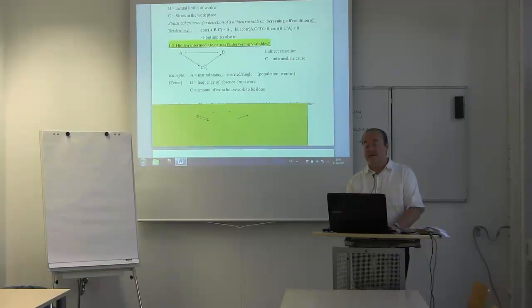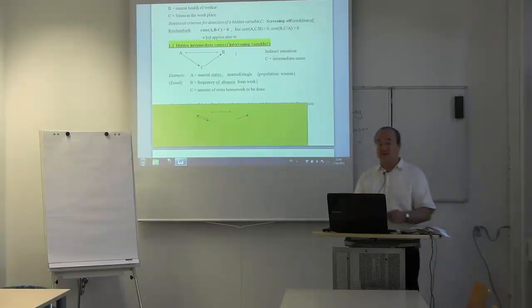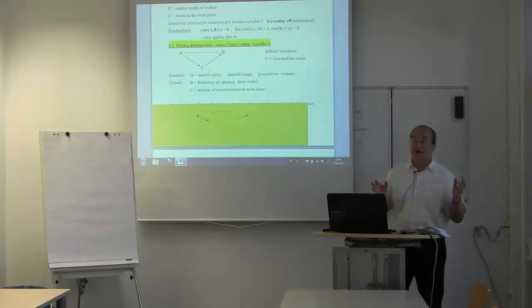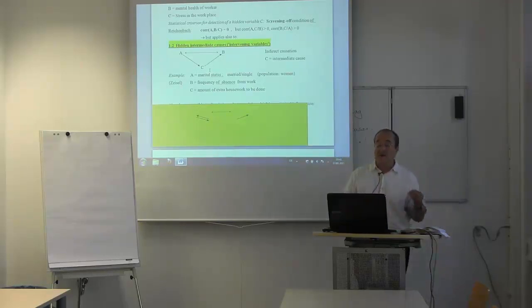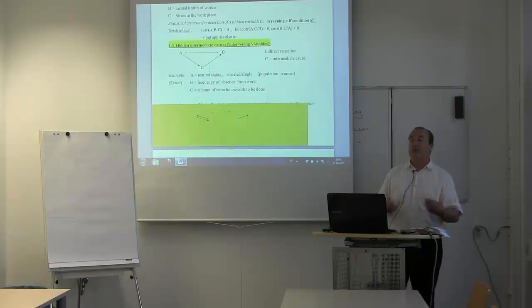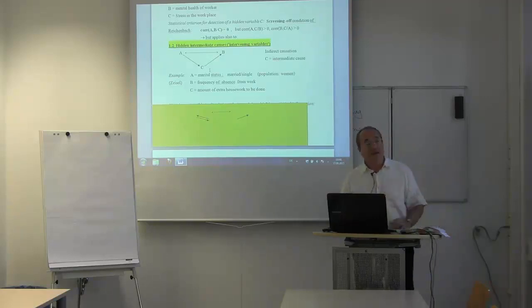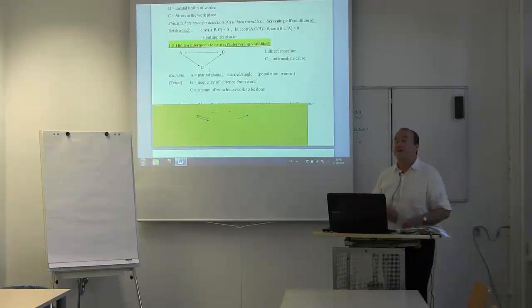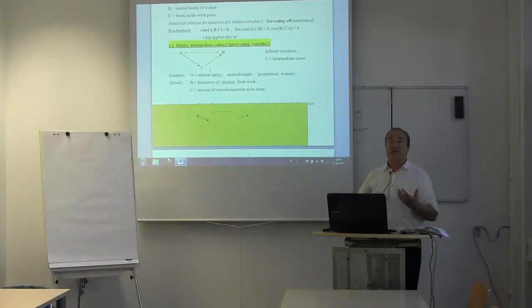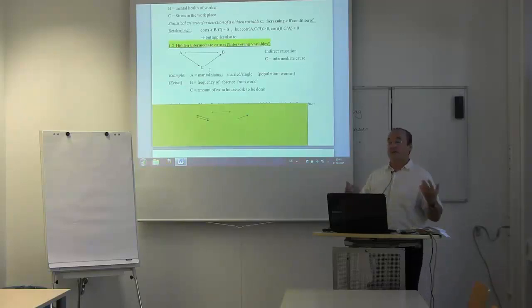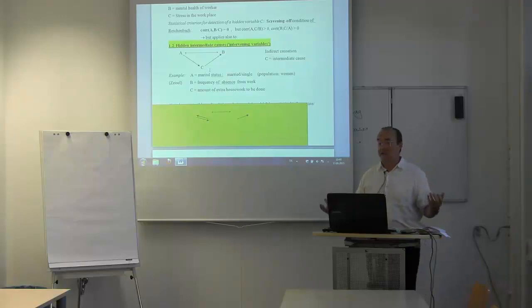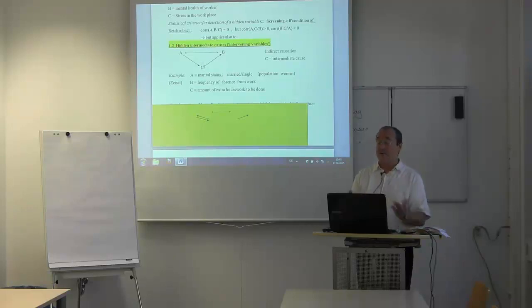The causal path goes over C — which was found out precisely by fixing on fixed values of C. When they compared married and single women who had the same amount of housework to be done, for instance no housework, there was no more correlation. Or when they compared both groups with a lot of housework, again no correlation. This shows the correlation is due to this variable, which from background knowledge is an intermediate cause and not a common cause.